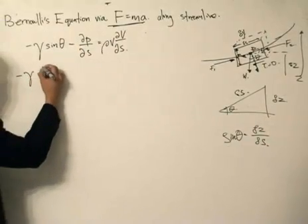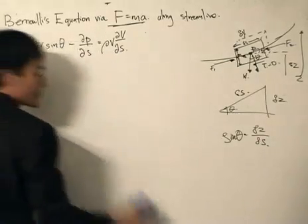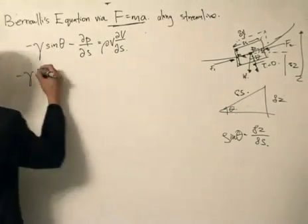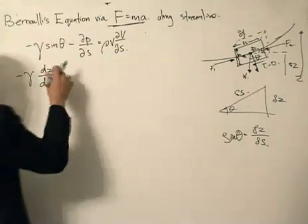So specific weight multiplied by a change in Z. Right now, why not we just use the differential form? Because there is no really any difference, as we are still dealing with quantities.